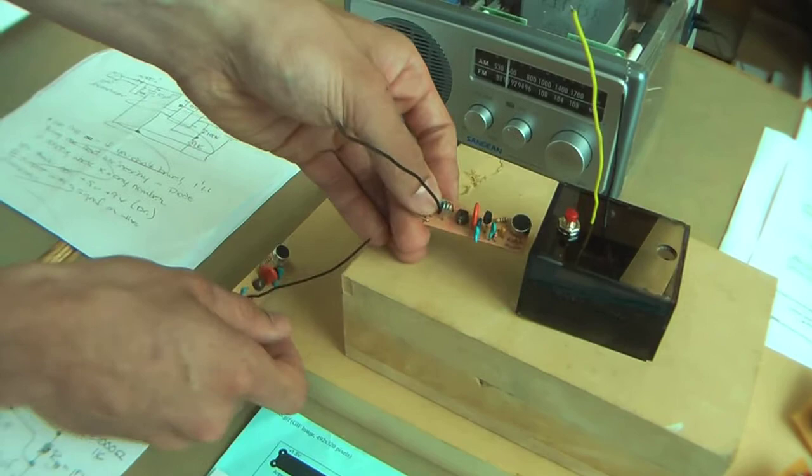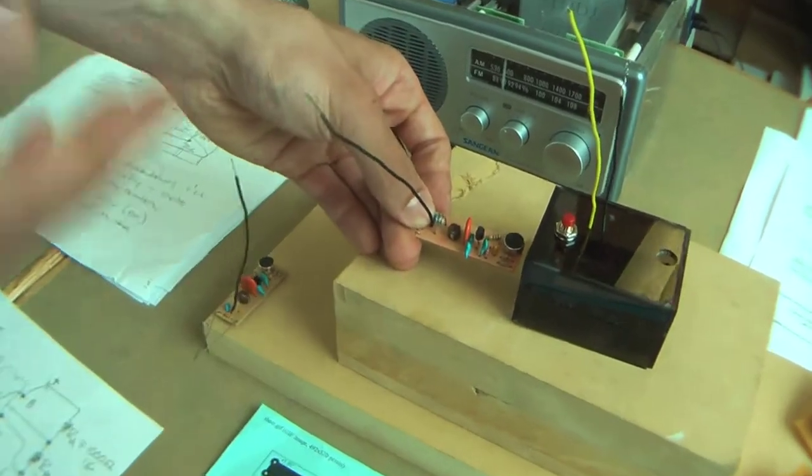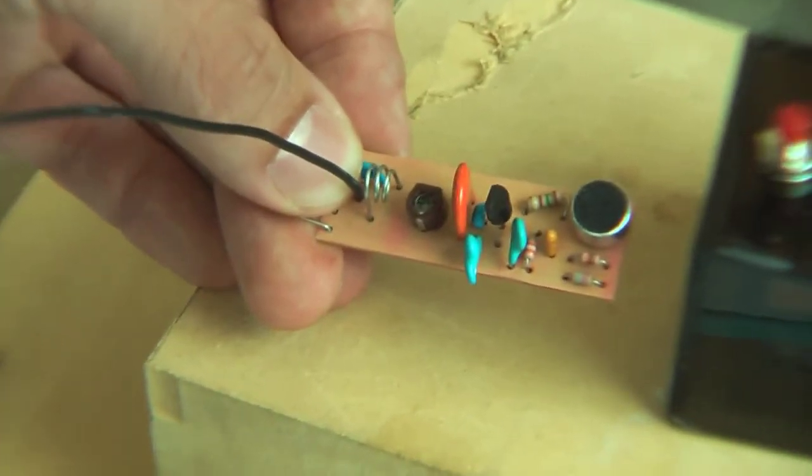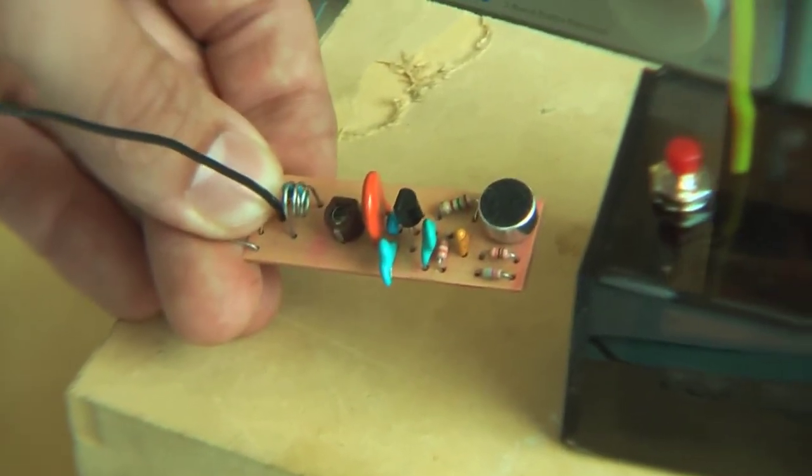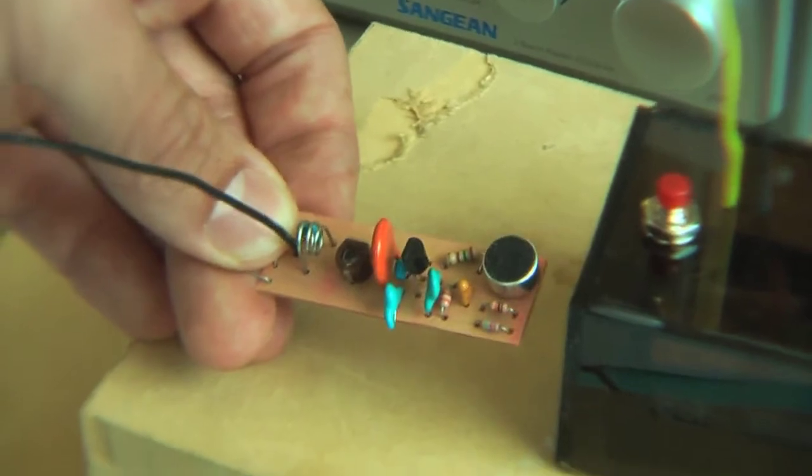As you twist it to the left it will create a higher FM frequency. As you twist it to the right it will create a lower FM transmission just because of how much it's restricting.